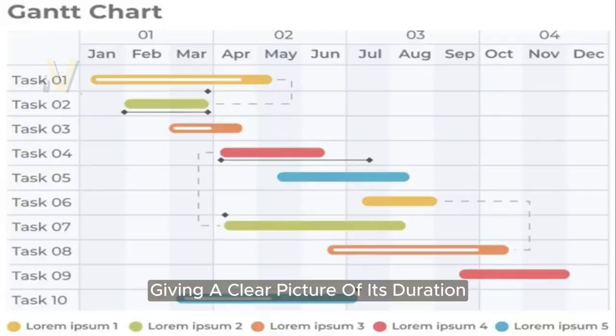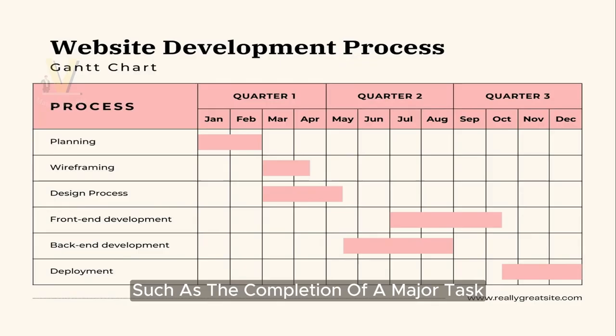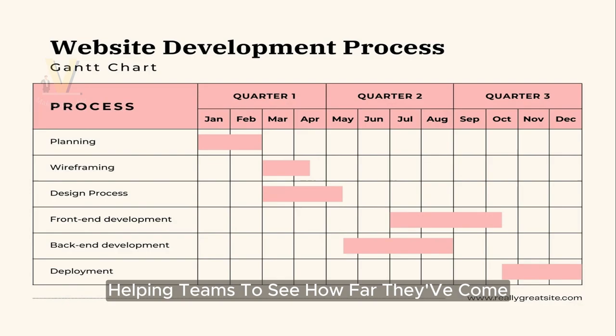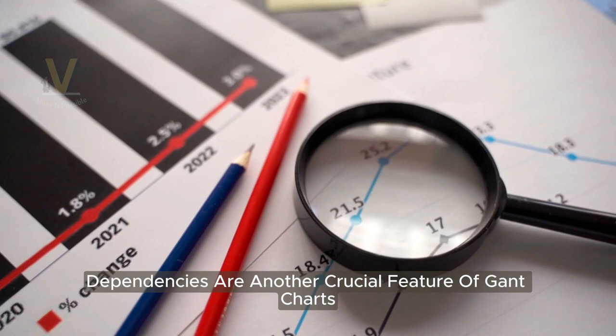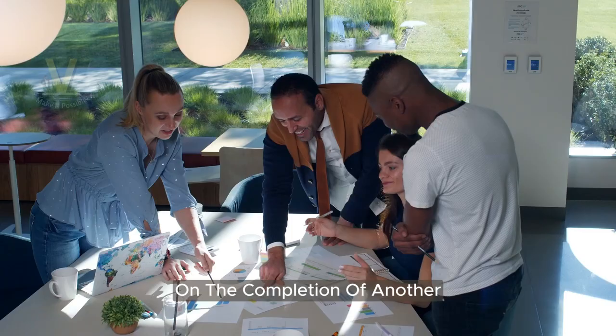Next, we have milestone markers. These are points of significance within the project timeline, such as the completion of a major task or the reaching of a project goal. They serve as reference points, helping teams to see how far they've come and how much farther they need to go. Dependencies are another crucial feature of Gantt charts — they illustrate the relationship between tasks, showing how one task may rely on the completion of another.